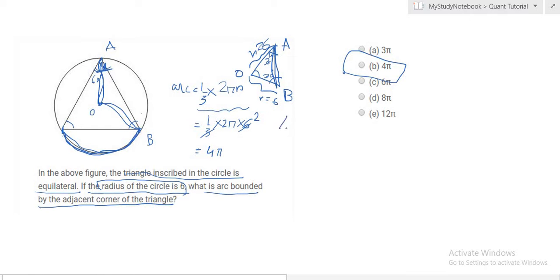We can find angle AOB, which is 180 degrees minus the other two angles, 30 and 30, leaving us with 120 degrees. This angle of 120 degrees is one third of 360 degrees.